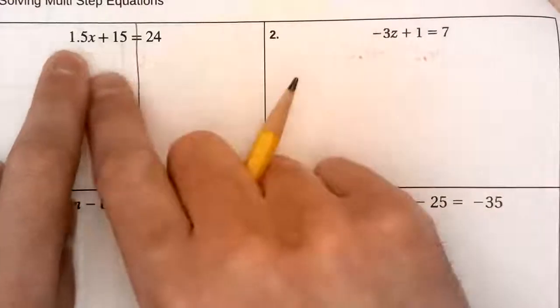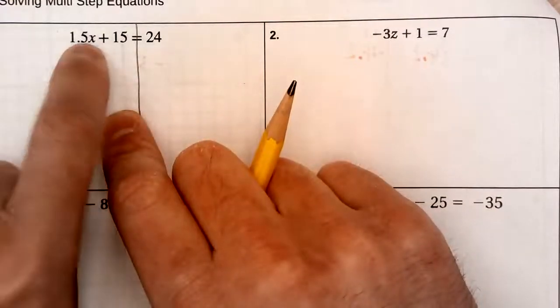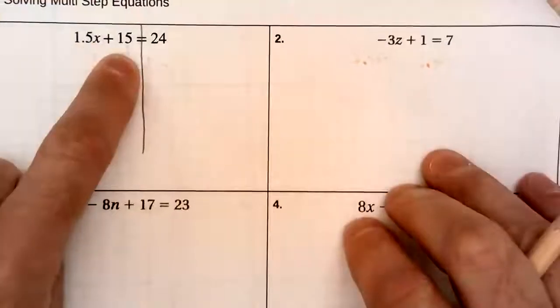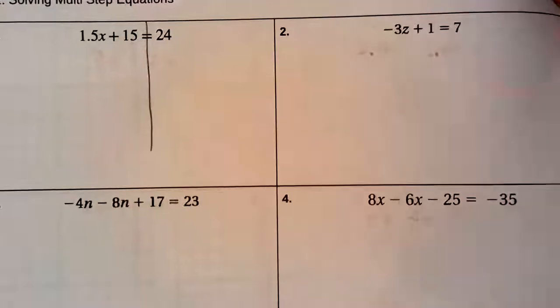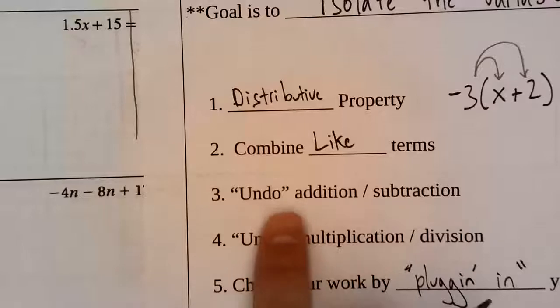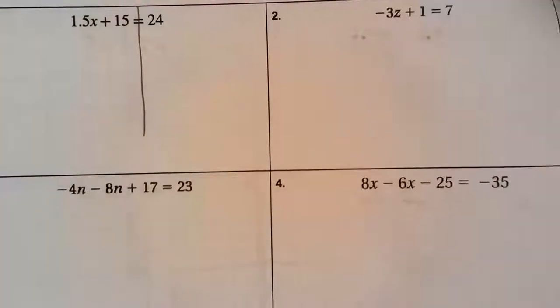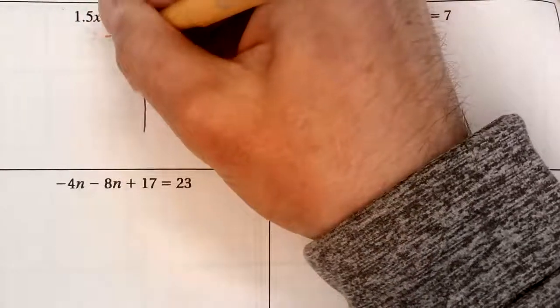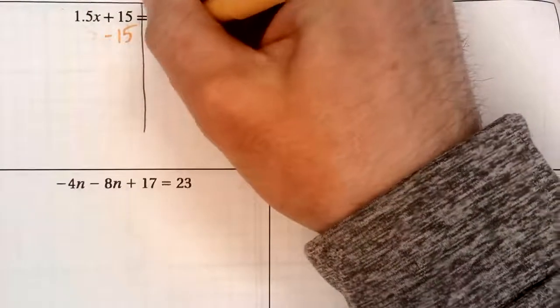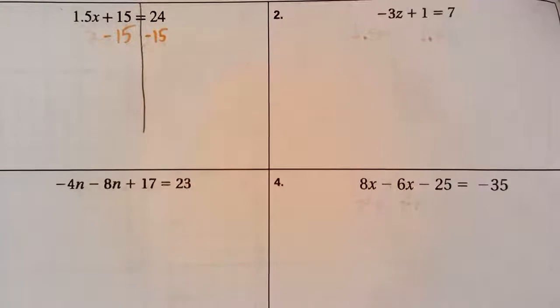So let's get x by itself. I can see that there's multiplication going on at 1.5 times x. There's also addition going on when we're adding 15. Let's start by undoing addition. So let's go ahead and subtract from both sides. I'm going to minus 15. What I do to one side I have to do to the other. I have to keep the equation balanced.